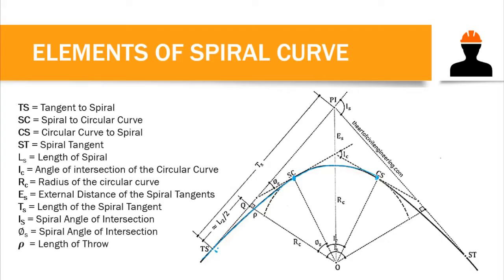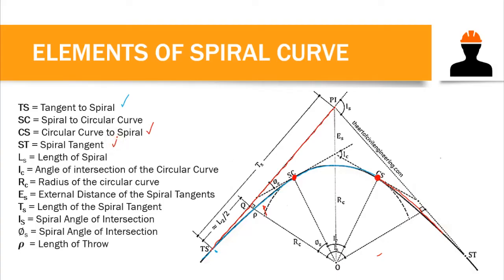The elements of a spiral curve include: TS, the tangent to spiral; SC, the spiral to circular curve — this is the point where the spiral curve ends and the circular curve begins; CS, the circular curve to spiral — the end of the circular curve and beginning of the next spiral; and ST, the end of our spiral curve.